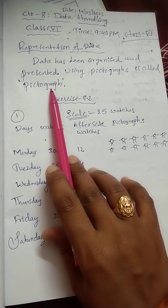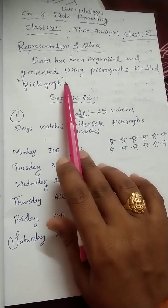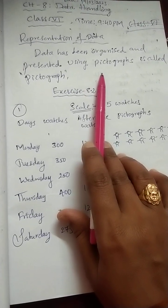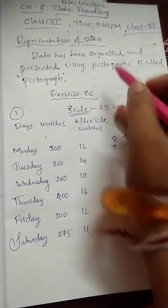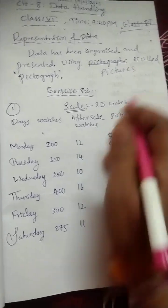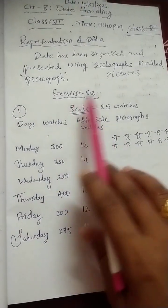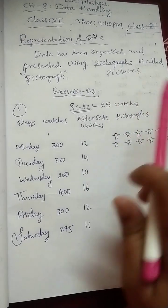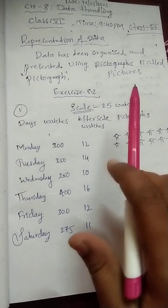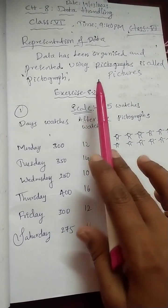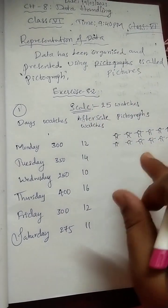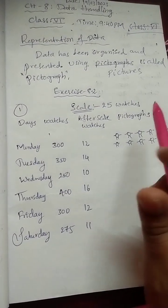When data is arranged in the form of pictures, it is called a pictograph. So instead of numbers, we use pictures. This is Exercise 8.2, and all the questions here are based on pictographs only. In the previous video, Exercise 8.1, we completed tally marks — now we are going to work with pictographs.